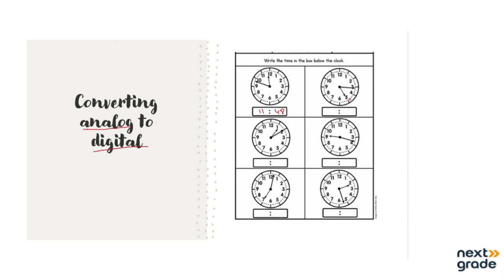Next example — this one is very easy as well. You can see the hour hand is at 5 and the minute hand is at 3. Starting from 12 to 1 it's 5 minutes, then 10, then 15. So the time on the digital clock is 05 hours and 15 minutes.